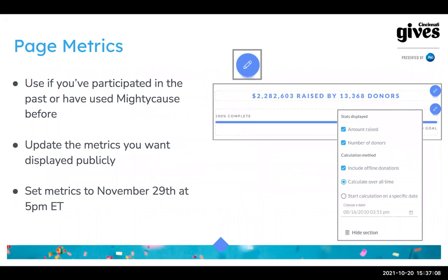To track progress toward your goal, you'll want to adjust your page metrics. Right on your profile you have a goal and progress bar with metrics below that show the number of donors and how much you've raised. This is all customizable — if you don't want a progress bar you can remove it, or you can opt out of displaying the number of donors. Basically every editable feature on your profile has a little pencil icon next to it that will open a screen where you can edit it.